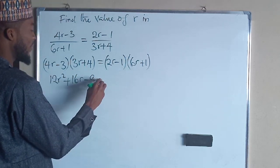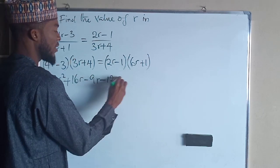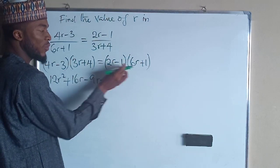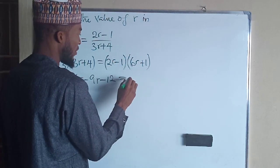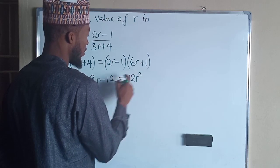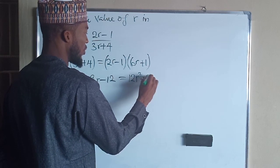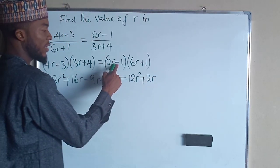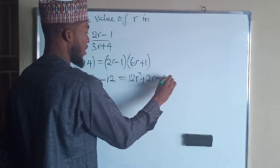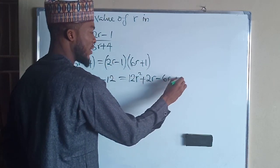Negative 3 times positive 4 is negative 12 on the left-hand side. But on the right-hand side, we are going to have 2R times 6R, which is 12R². Then this times this gives us plus 2R. Negative 1 times 6R gives us negative 6R. Negative 1 times positive 1 is negative 1.